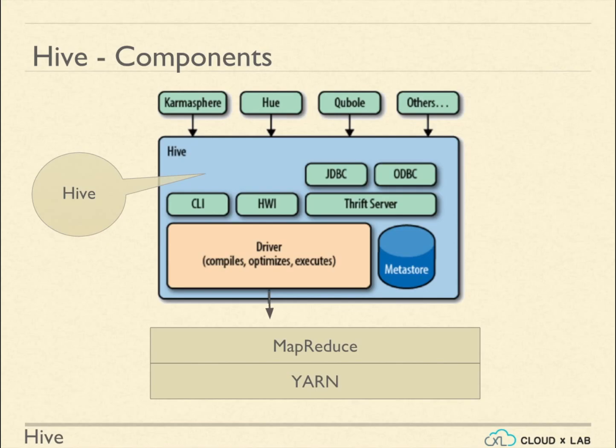With PIG, datasets used in a session get lost once we exit the session. With Metastore, Hive stores the metadata in a relational database. This makes sure the tables and databases created in a session are available across sessions.